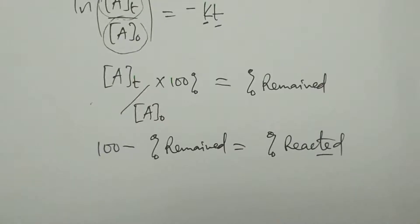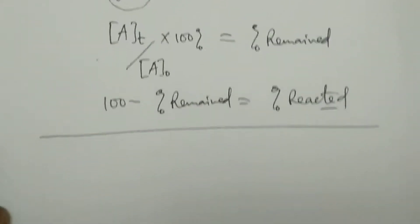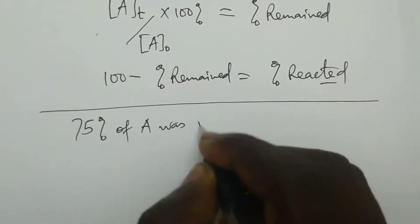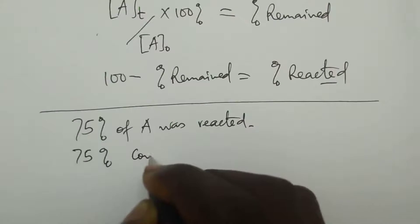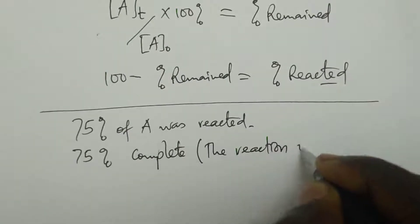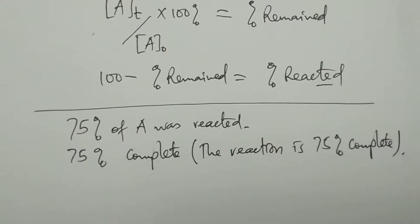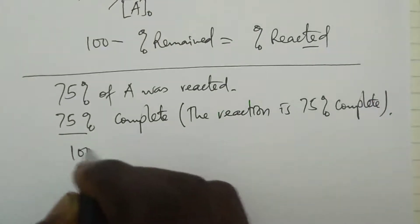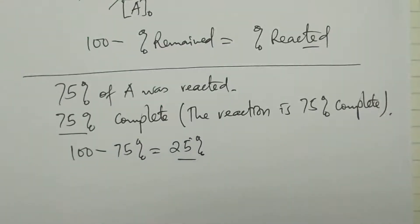When you're given a problem stating 75% of A was reacted, or in other words, the reaction was 75% complete, both phrases mean that 75% of A has reacted. So the percentage remaining would be 100 minus 75%, which is 25%.